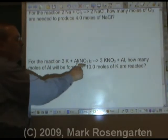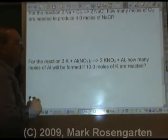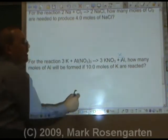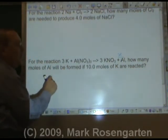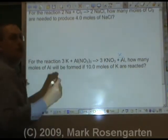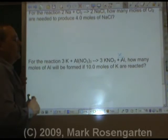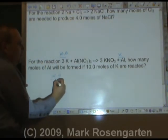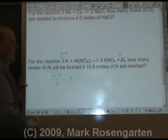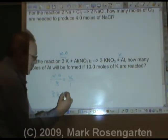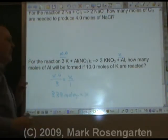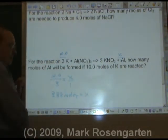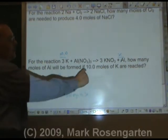For the reaction 3K plus Al(NO₃)₃ forms 3KNO₃ plus Al, how many moles of Al will be formed if 10.0 moles of K are reacted? So 10.0 is to three as X is to one. What's 10 divided by three? 3.33 moles. And because it's a one to three ratio, whatever K is, Al will be one third of that. Three sig figs because of these three sig figs.